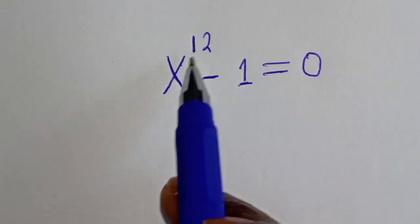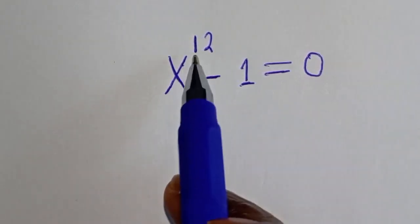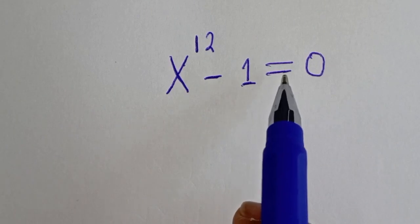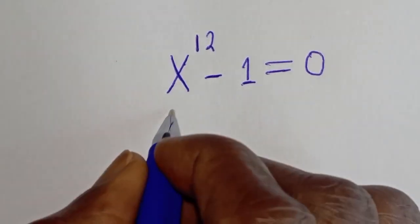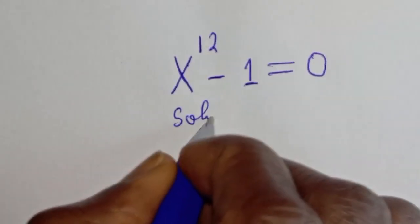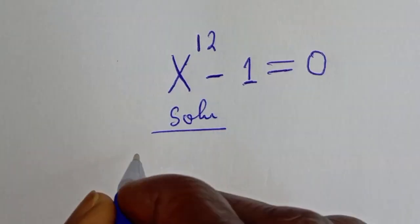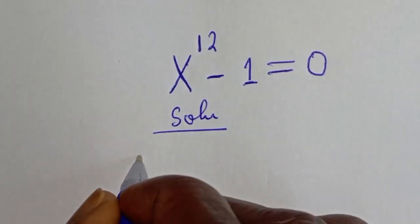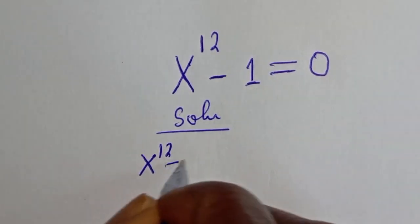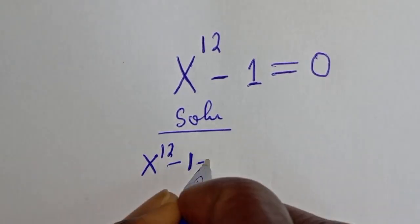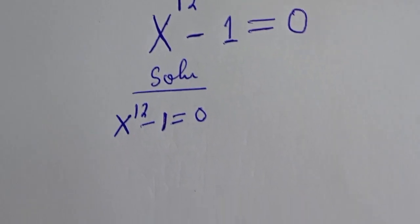Hello. How to solve for s from this given equation: s raised to power 12 minus 1 is equal to 0. We have the given equation, s raised to power 12 minus 1 is equal to 0.